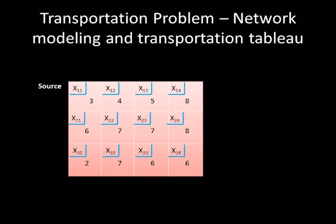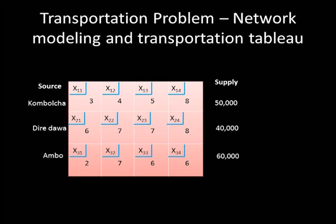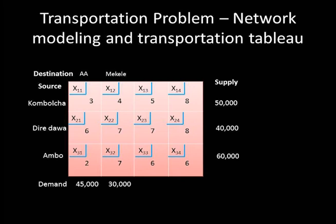Next, we place the source names in the left margin of each row and their supplies in the right margin. Source 1 is Kombolcha with supply 50,000; source 2 is Dire Dawa with supply 40,000; source 3 is Ambo with supply 60,000. The destination names go on the top margin of each column, with forecasted demands in the bottom margin. Column 1 is Addis Ababa with demand 45,000; column 2 is Mekele with demand 30,000; column 3 is Bahir Dar with demand 40,000; and column 4 is Assosa with demand 35,000. This is the final transportation tableau for the example.